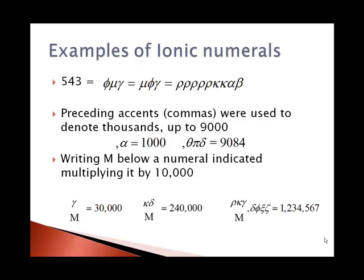We only use commas with the alpha through the theta, with the numerals for 1 through 9. Once you get 10,000, they use this capital M, which is probably a holdover from the attic system, since mu means 10,000. So a gamma over a mu would mean 30,000.